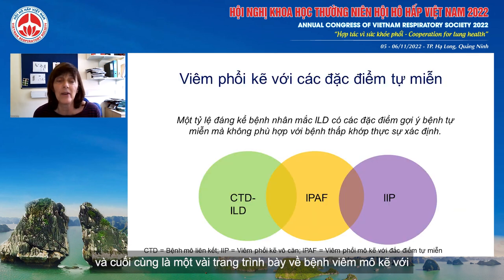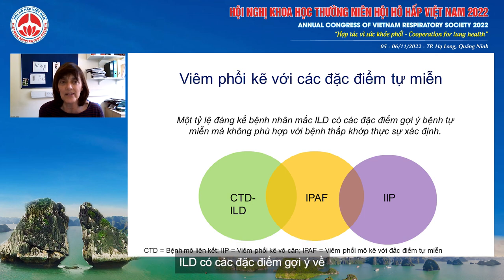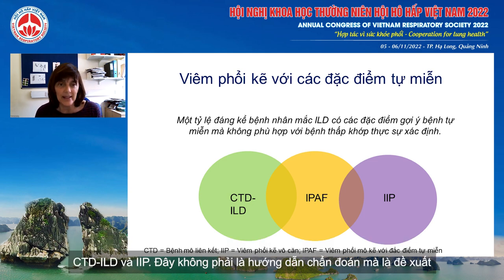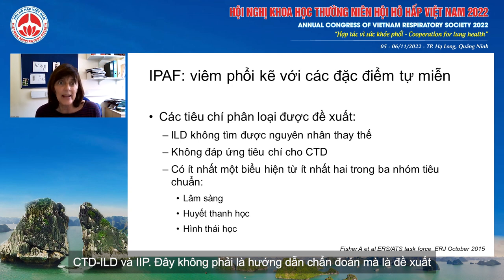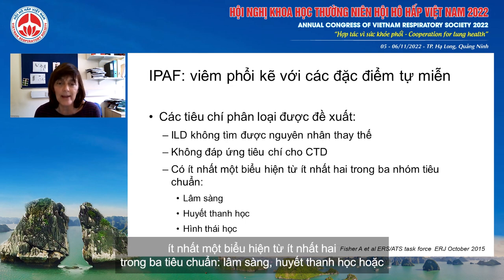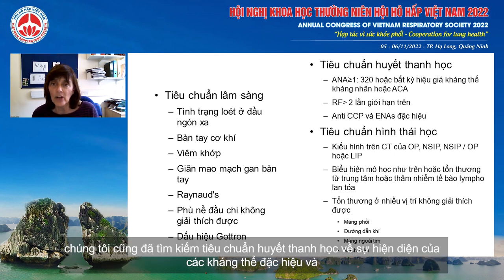A few words about interstitial pneumonitis with autoimmune features. There is a significant proportion of patients with ILD who have features of autoimmune disease without fitting into a neat rheumatological diagnosis, straddling somewhere between CTD-ILD and the idiopathic entities. This is not a diagnosis, but a proposal by an ERS-ATS task force to classify these patients. They have to have at least one feature from at least two of three domains: clinical, serological, or morphological, including a number of symptoms, presence of specific antibodies, and morphological criteria.